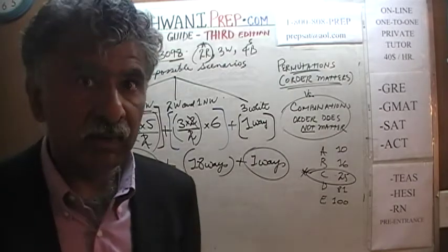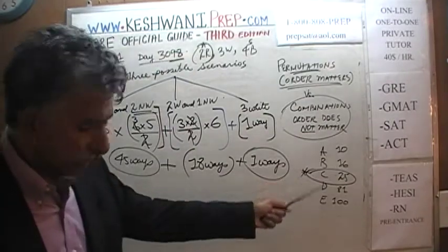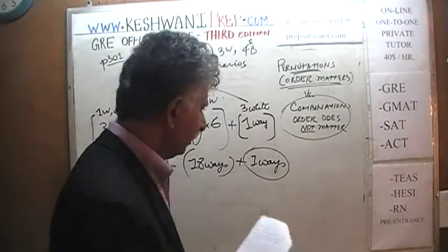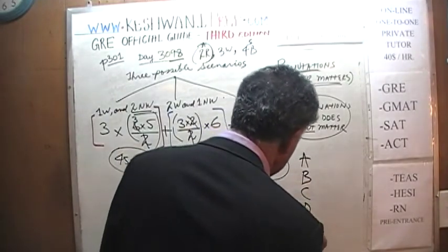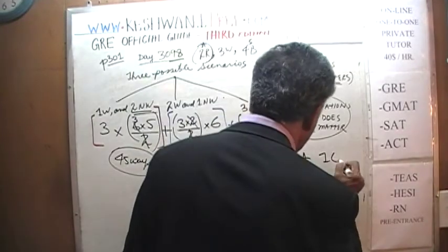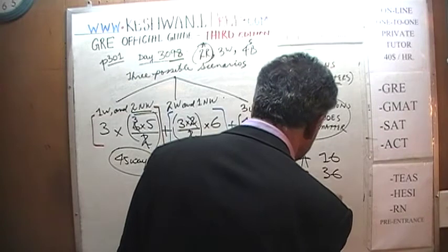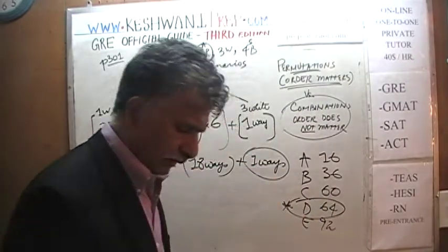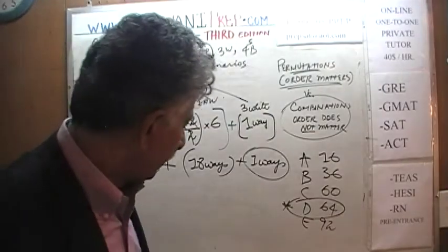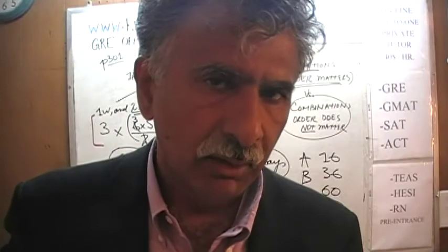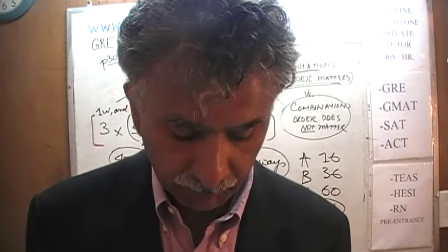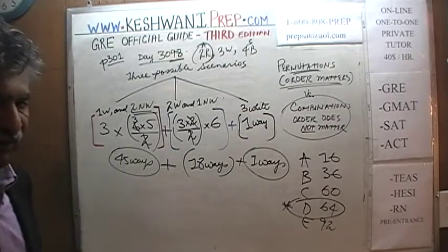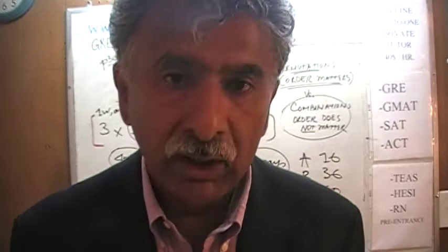The answer is 64. I forgot to give you the answer choices — it is way too late now, but here they are: 16, 36, 60, 64, 92. The answer is 64 because 45 plus 18 plus 1 equals 64. Note that this can show up as a multiple choice question or as an open-ended question in the GRE where you put in your own answer. Either way, the answer is 64.